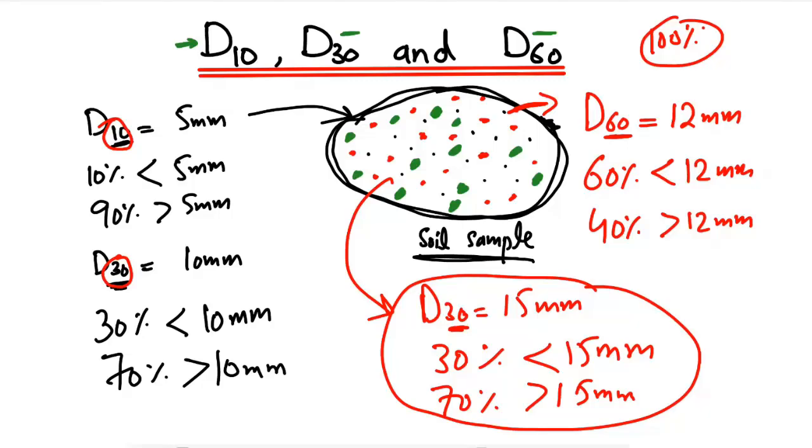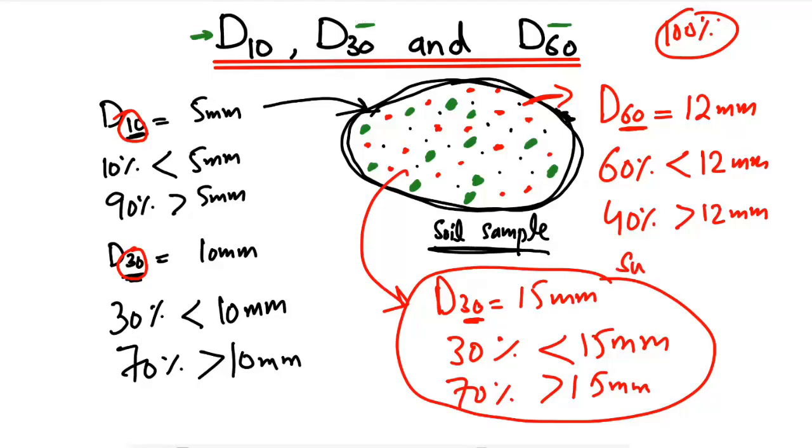This is the way how you will describe D10, D30, and D60 in your soil sample. Hope you guys understand. Don't forget to subscribe our channel for civil engineering videos. Thank you for watching.